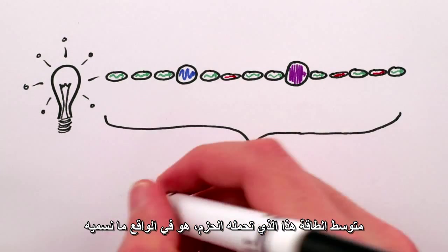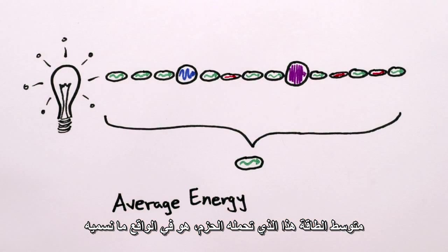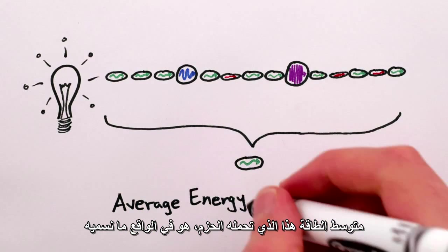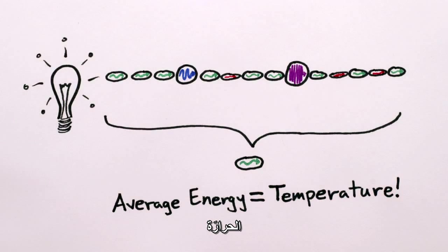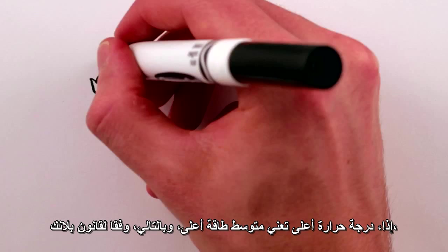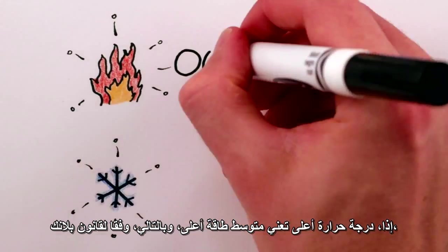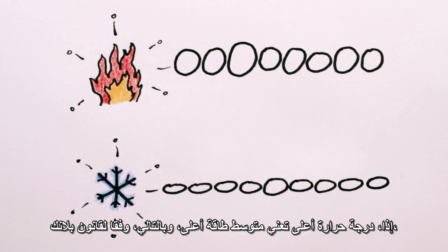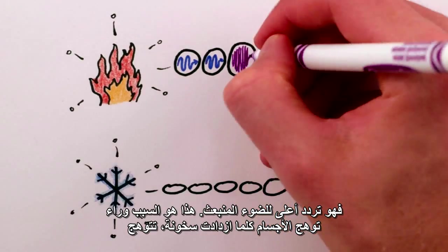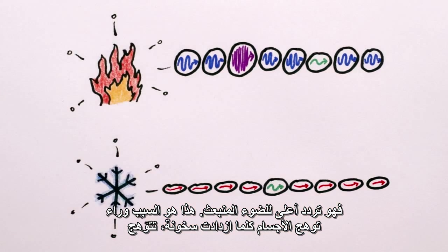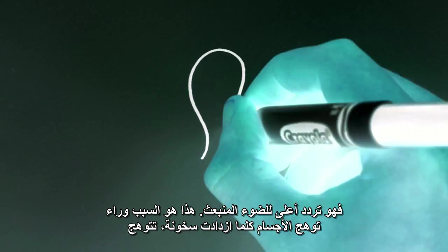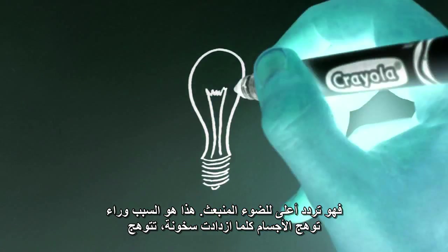This common average energy that the packets carry is, in fact, what we mean by temperature. So a higher temperature just means higher average energy, and thus, by Planck's rule, a higher frequency of light emitted.